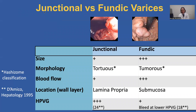This differentiation of junctional from fundic varices is very important because they differ in their morphology, pathophysiology, natural history, and response to treatment. Size-wise, fundic varices are very large; junctional varices are more narrow and ropey. Morphologically, junctional varices are ropey and tortuous, like esophageal varices — this is the description by Hajizomi. Fundic varices are tumorous and grape-like.